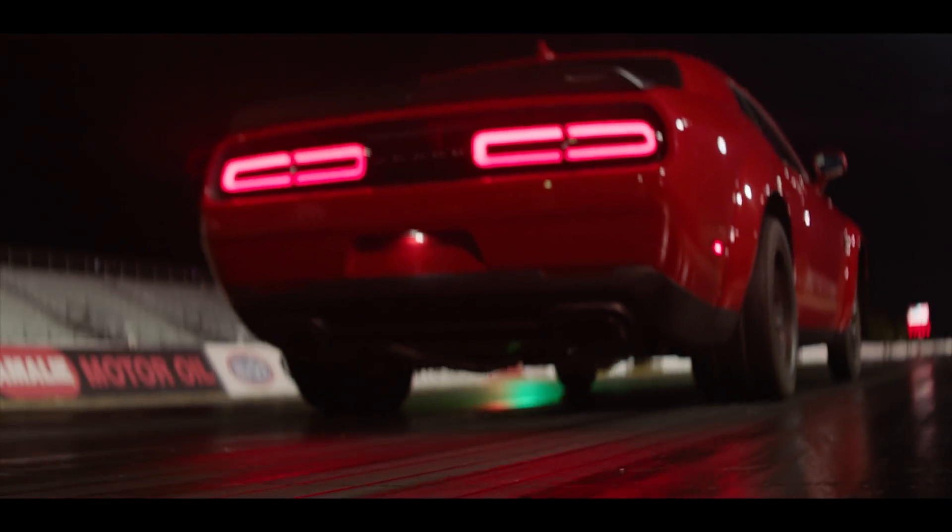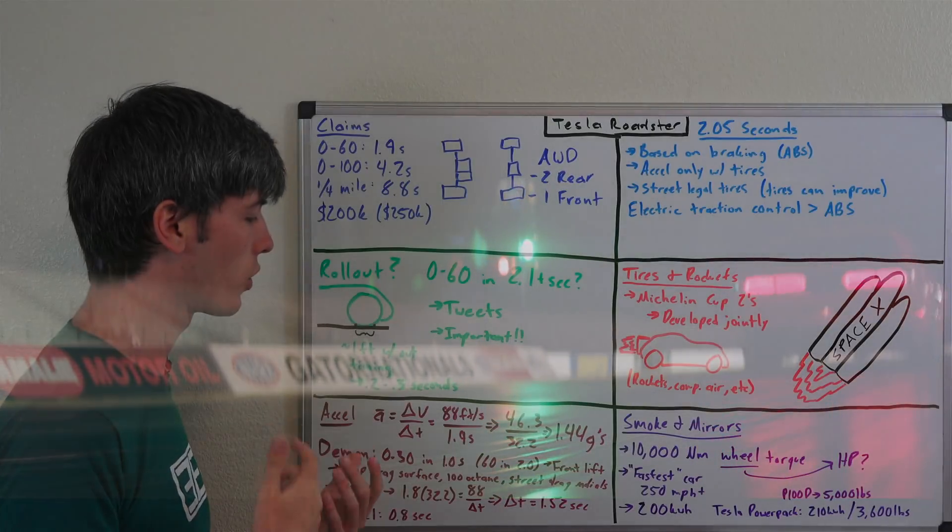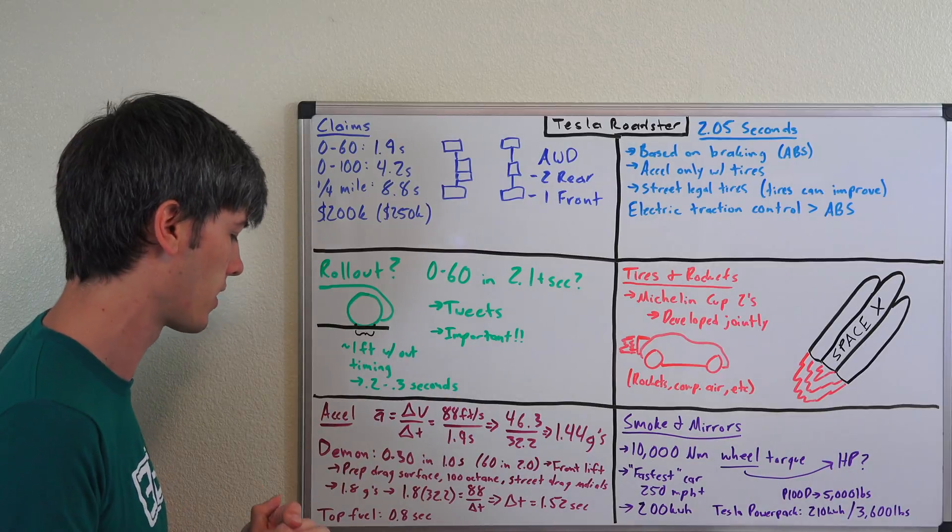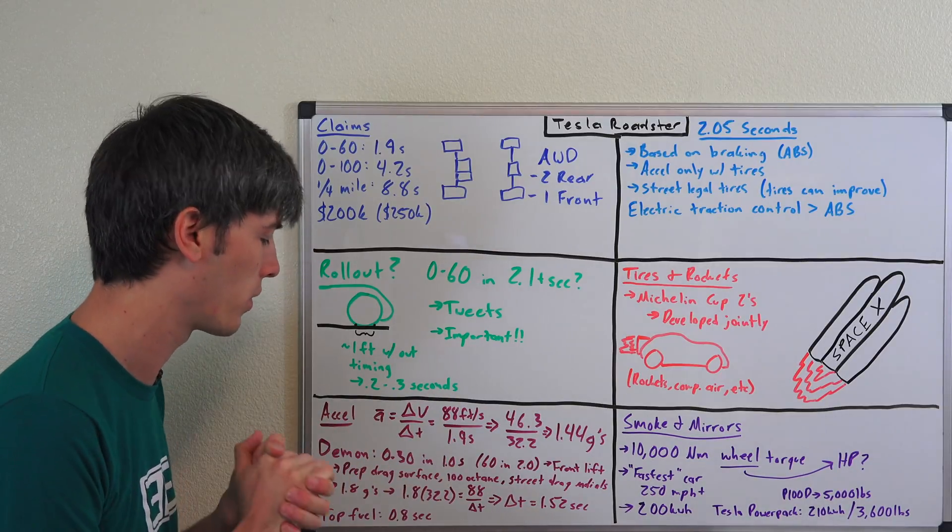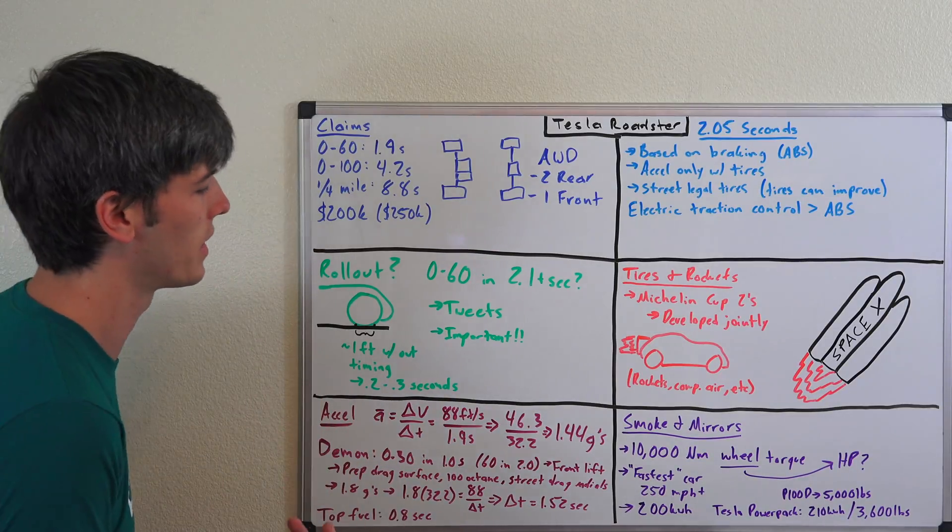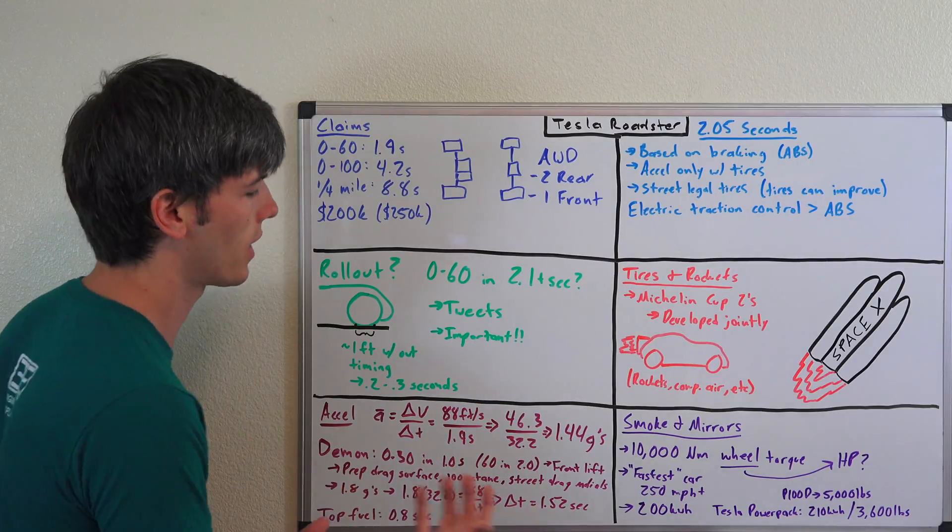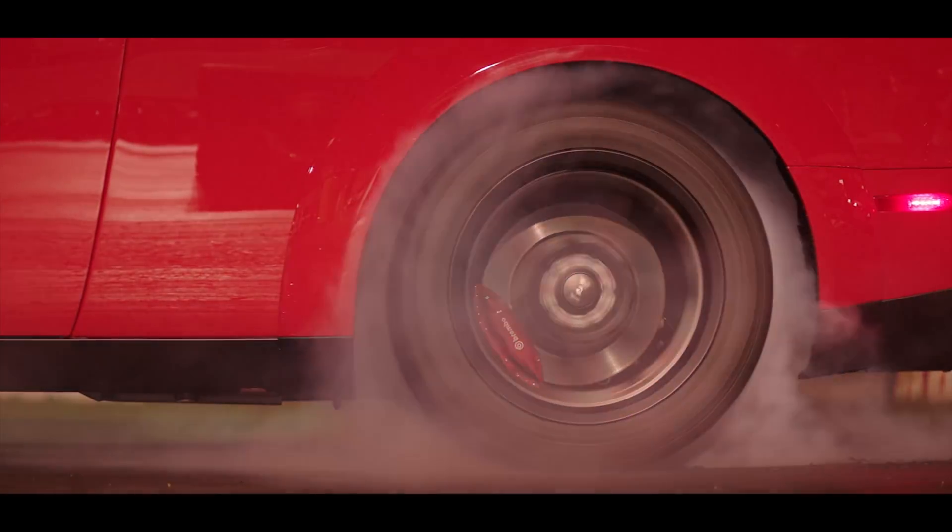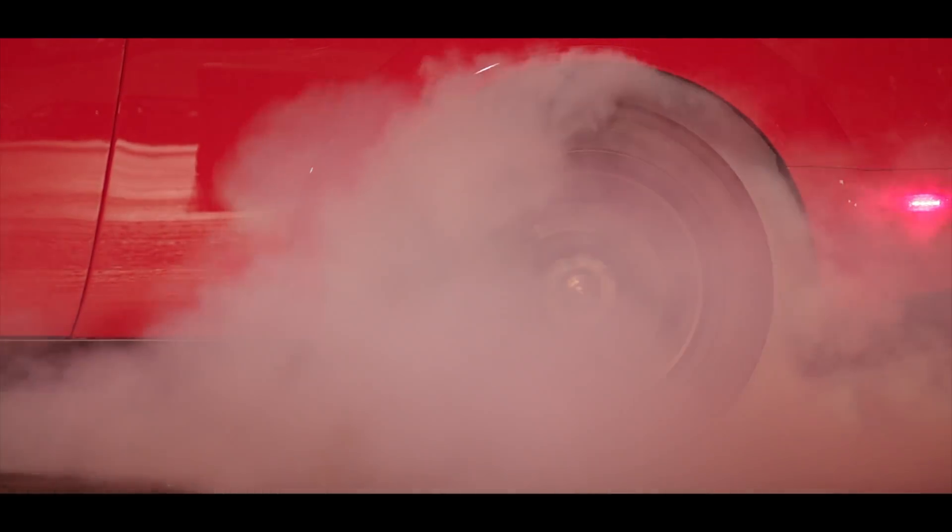Additionally, Dodge claims that the Dodge Demon hits 1.8 G's peak g-force right at the start. Now if you're to assume that the tires are able to maintain 1.8 G's of acceleration, then you can hit a 0 to 60 time in just 1.52 seconds. Top fuel cars are doing it in 0.8 seconds. So ultimately all this comes down to is tire technology. As tire technology improves we will see 0 to 60 times go down. As it remains the same, we won't see much improvement in 0 to 60 times no matter how much power you throw at these vehicles.